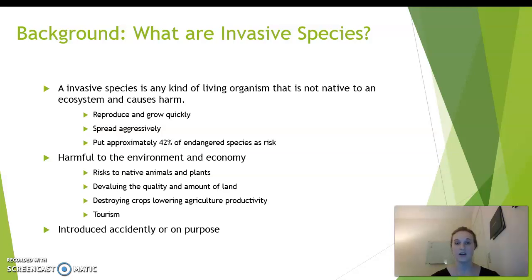To start off, some background about invasive species. An invasive species is any kind of organism that's not native to a region and it causes harm to the ecosystem. They spread quickly and aggressively, and about 42% of endangered animals are at risk because of invasive species. They're harmful to the environment but also to the economy. They risk native animals and plants, devalue the amount and quality of land, and destroy crops, which leads to lower agricultural productivity and reduced tourism. They can be introduced accidentally or on purpose.